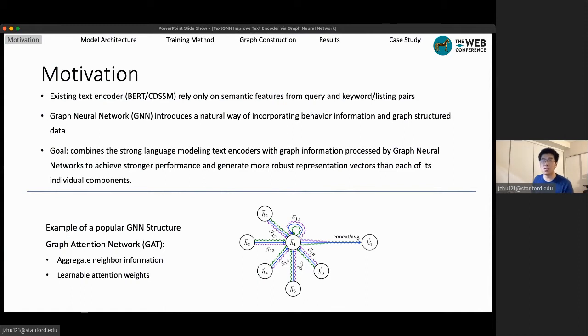That's why we are introducing graph neural network here, which introduces a natural way of incorporating behavioral information, such as historical logs and clicks. The goal of this study is to combine the strong language model text encoders with graph information processed by graph neural networks to achieve stronger performance and generate more robust representation vectors than each of its individual components.